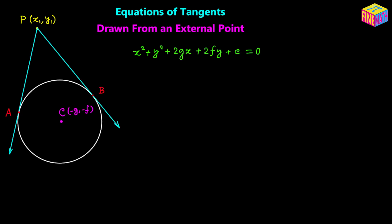I'm going to join the center and point A with a straight line, so the line segment CA equals the radius of this circle. From the general form of the circle, the radius r equals the square root of g squared plus f squared minus c. Since the equation of the circle is provided, g, f, and c are all known, so we can easily calculate the value of r.